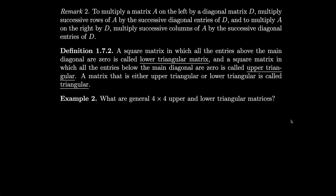A square matrix in which all the entries above the main diagonal are zero is called lower triangular, and a square matrix in which all the entries below the main diagonal are zero is called upper triangular. A matrix that is either upper or lower triangular is called triangular — it doesn't have to be both. Both would be diagonal.